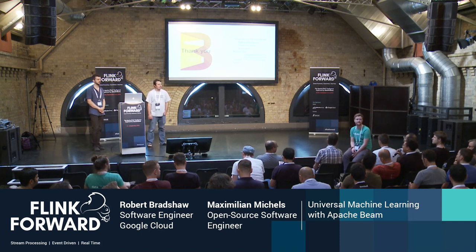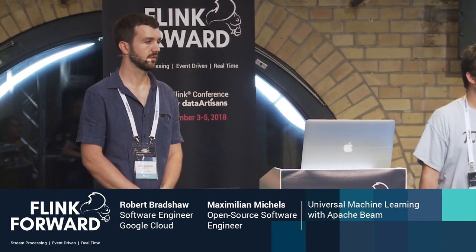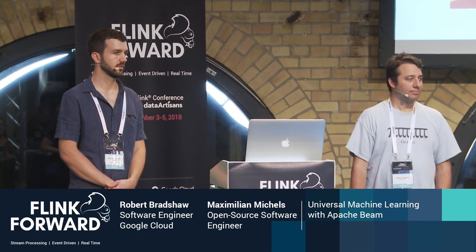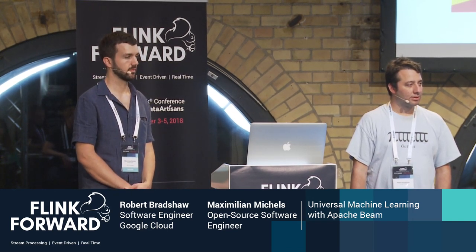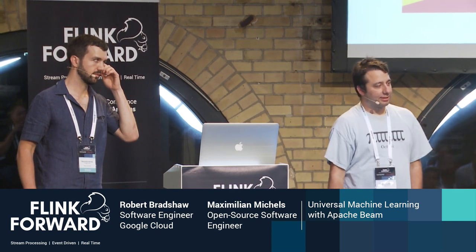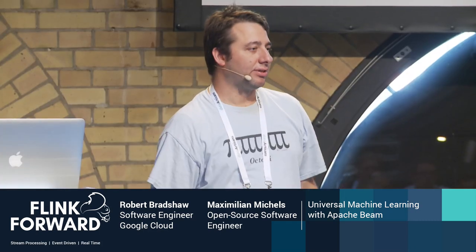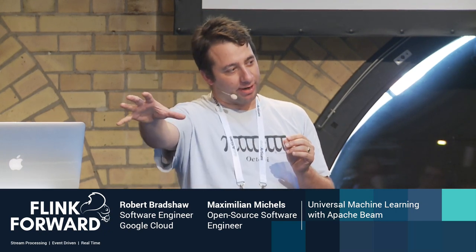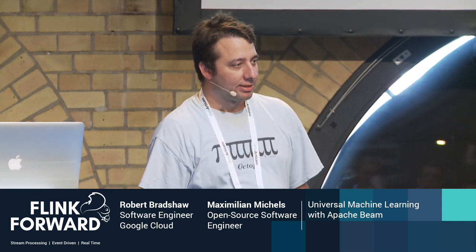Question: Can the Beam runner work over multiple backends simultaneously — for example Flink and Google Dataflow at the same time, with some kind of integration? Answer: You define your pipeline and send it to a runner, and it runs in its entirety on that runner. You could run one pipeline on one runner, have it write outputs, and then on another runner have it read those outputs and continue from there.